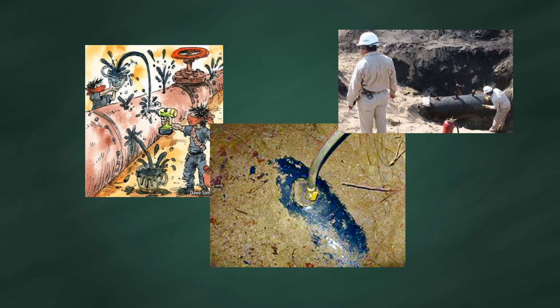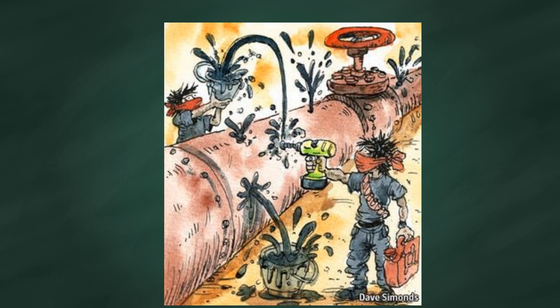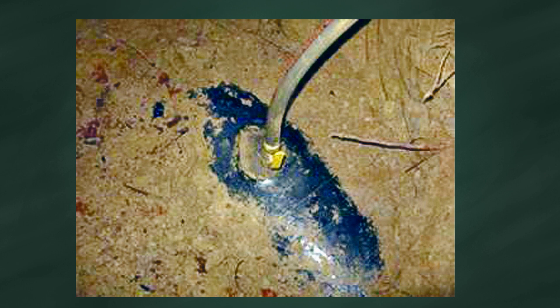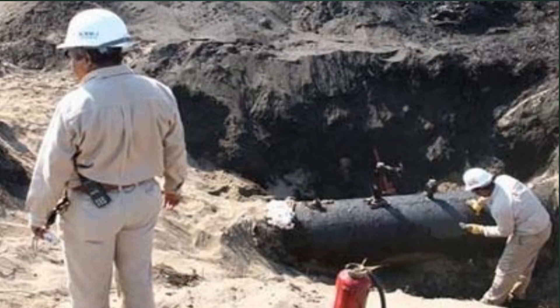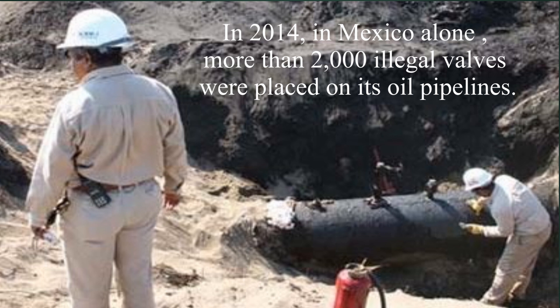Before I talk about Rogue Access Point, let's look at these pictures. This cartoon shows how the oil pipeline is tapped into and tons of oil were stolen. Stealing from the pipeline is a billion-dollar business globally. In 2014, in Mexico alone, more than 2,000 illegal valves were placed on its oil pipelines.